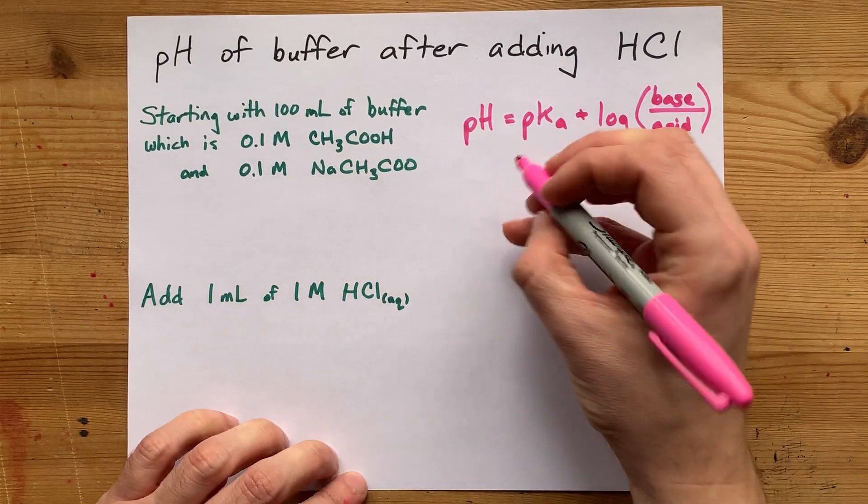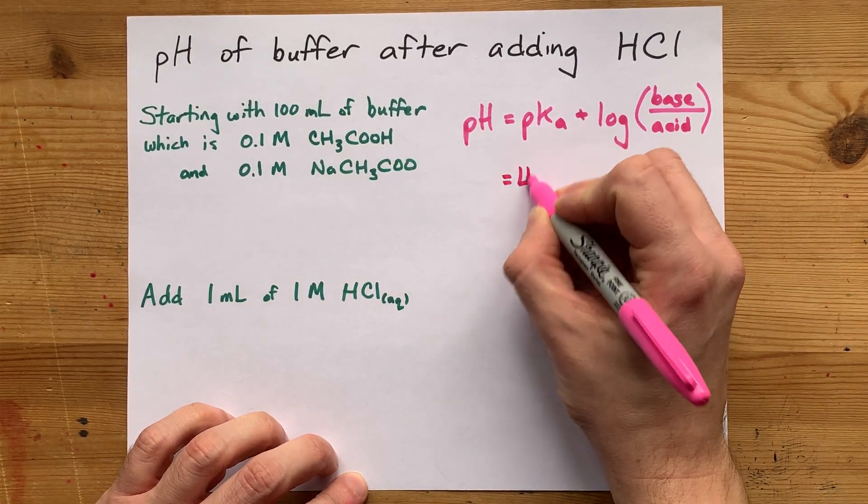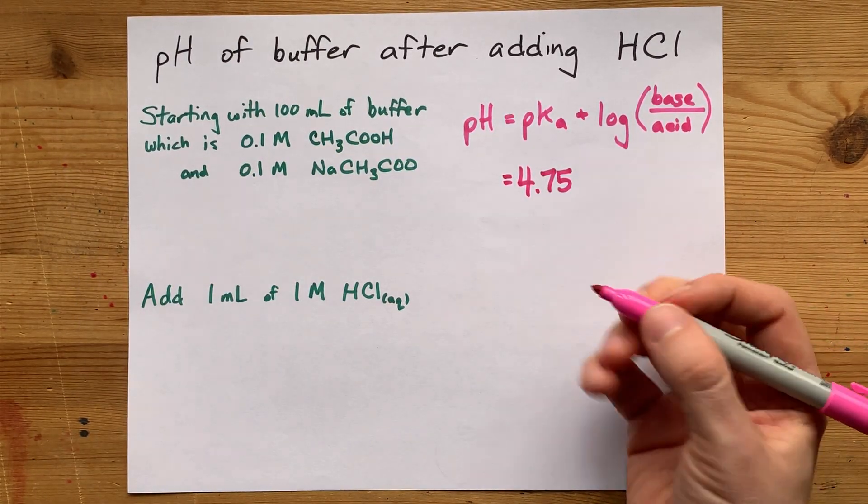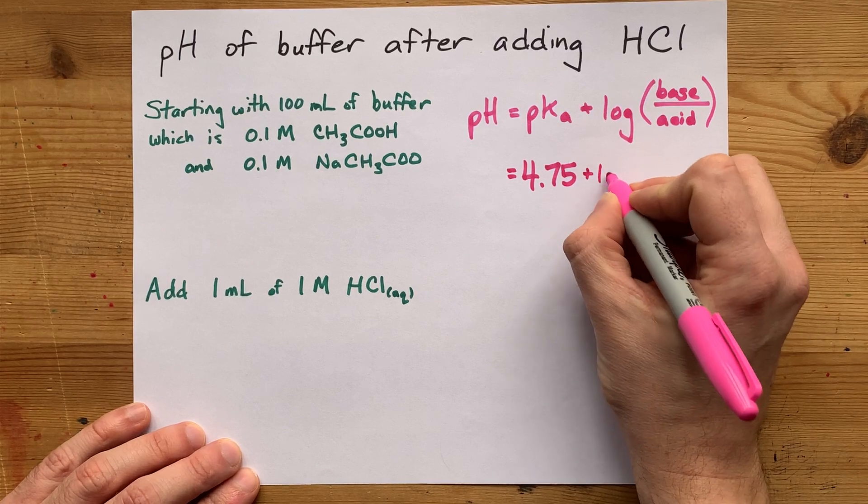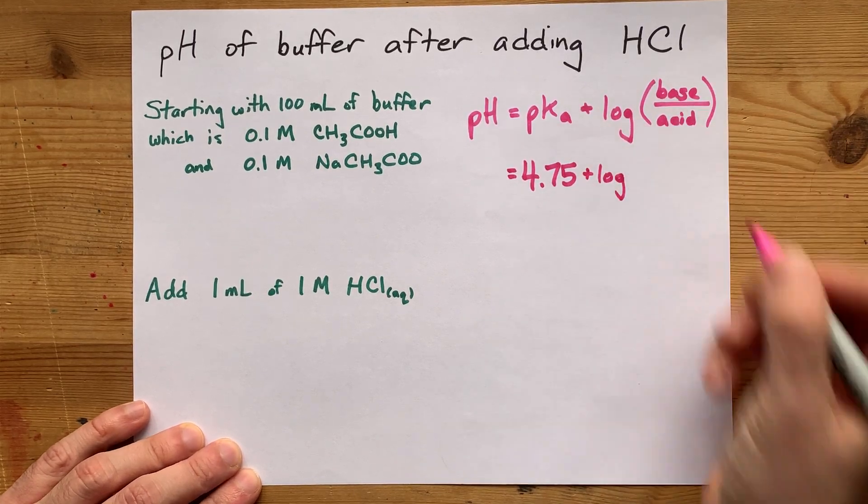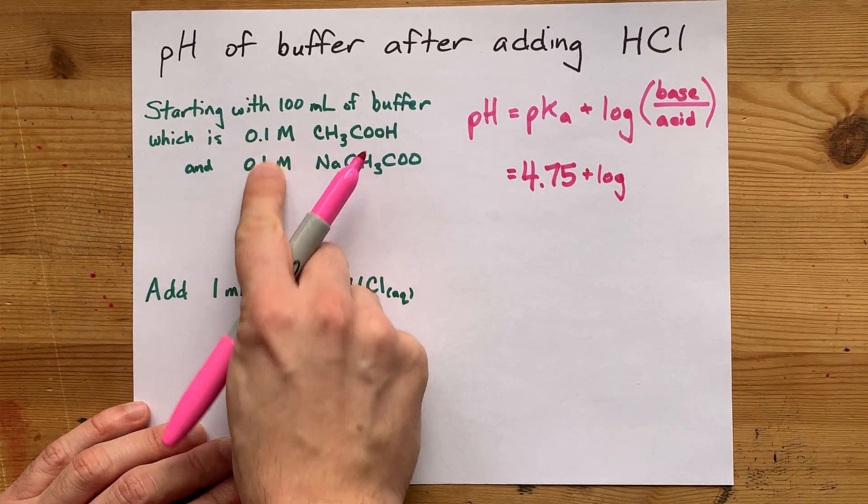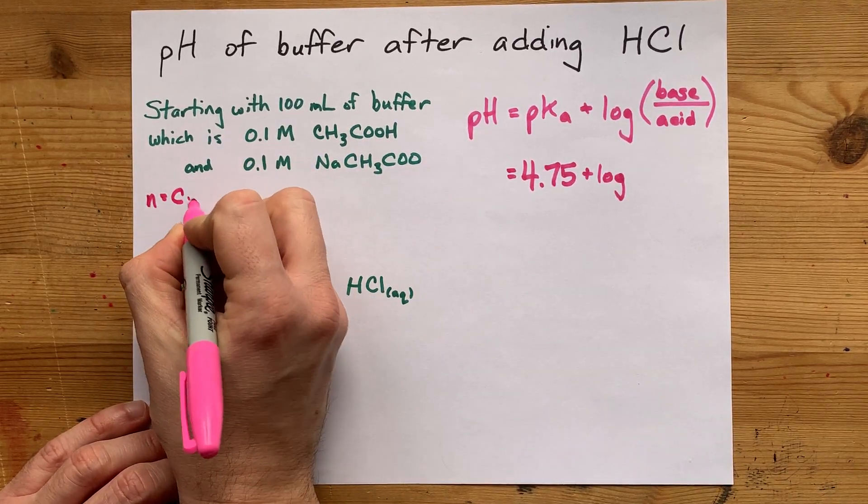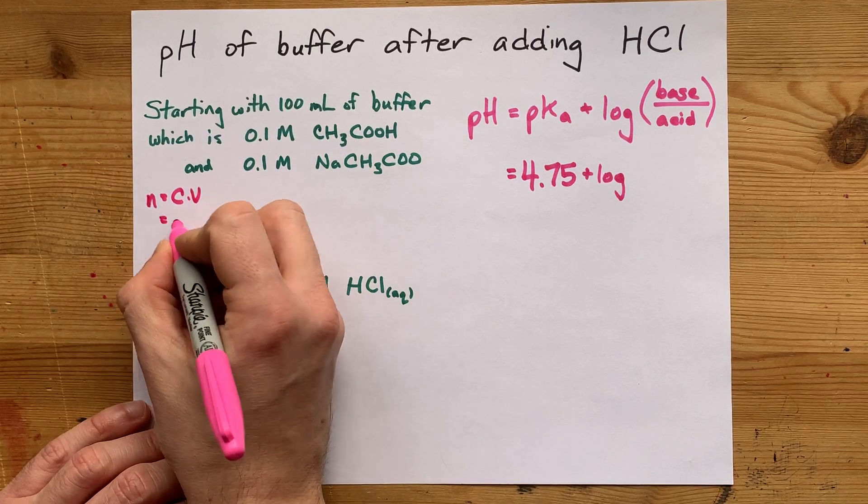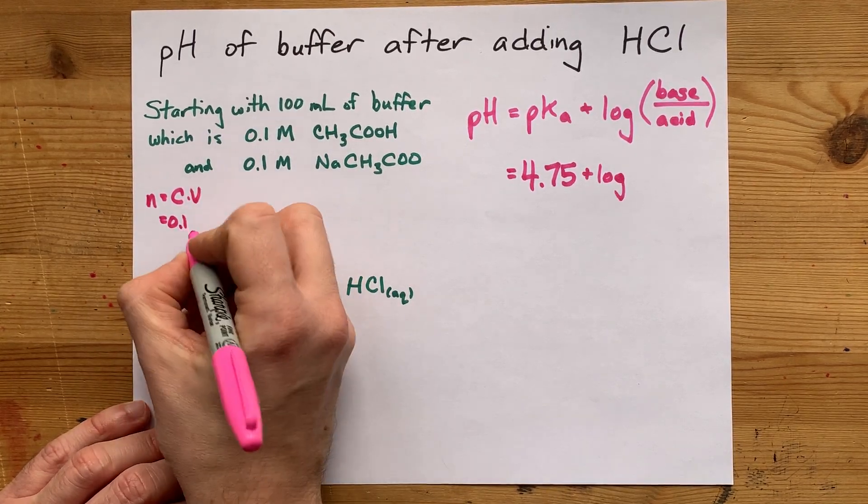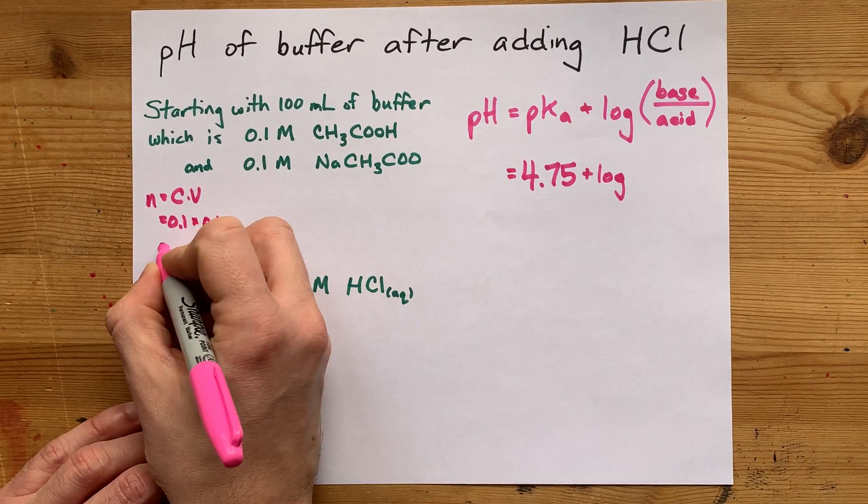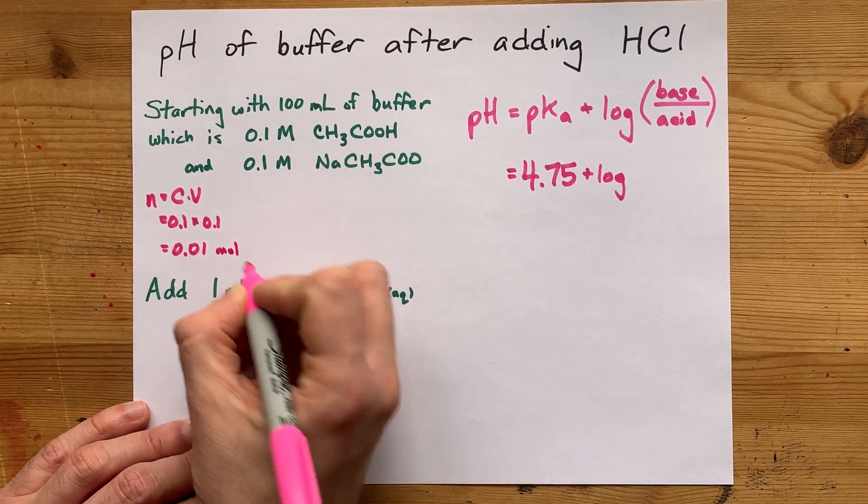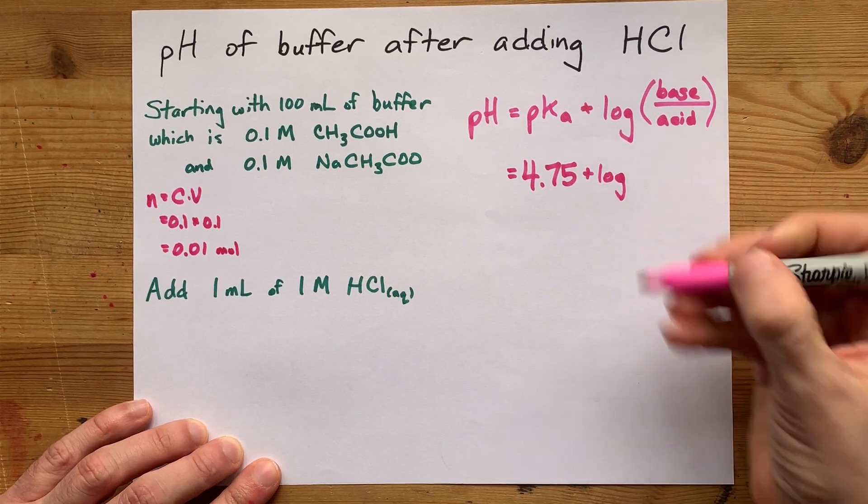Now acetic acid has a pKa of 4.75, 4.76 is sometimes listed, and we are going to need to know the number of moles of base and acid. Now we are starting with the same concentration of both base and acid. The number of moles is concentration times volume. The concentration is 0.1 moles per liter and we have 0.1 liters of it as well, which means that we're starting with 0.01 moles of both base and acid.